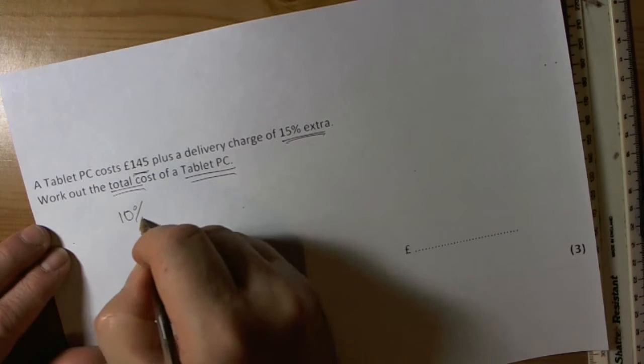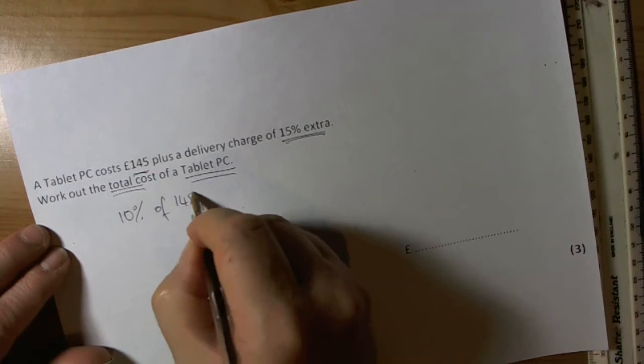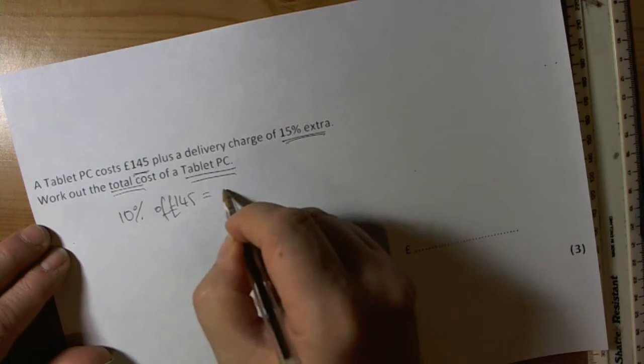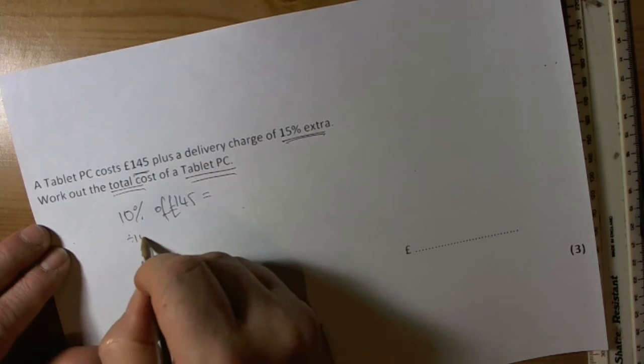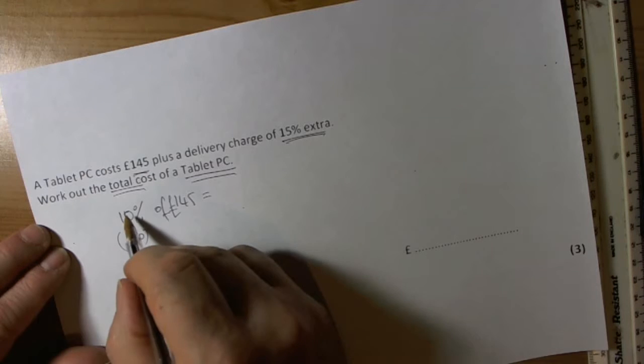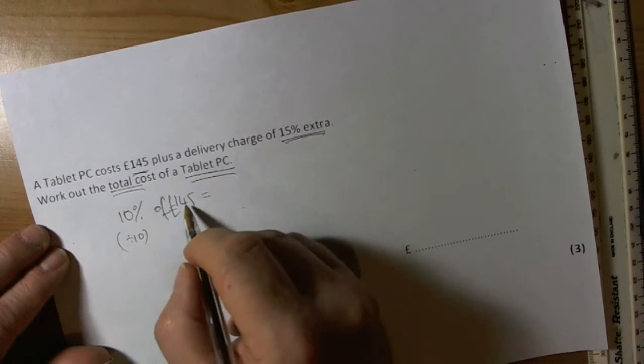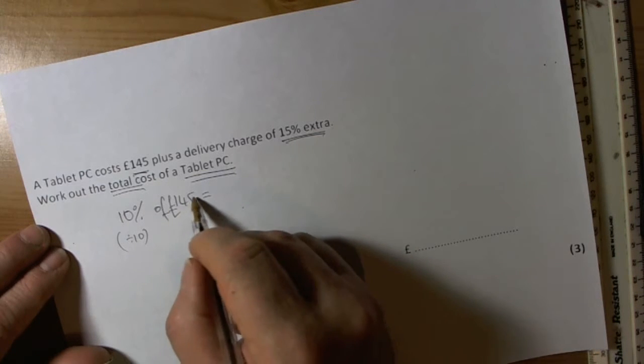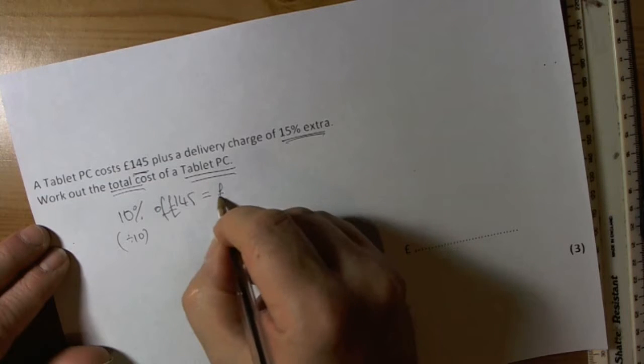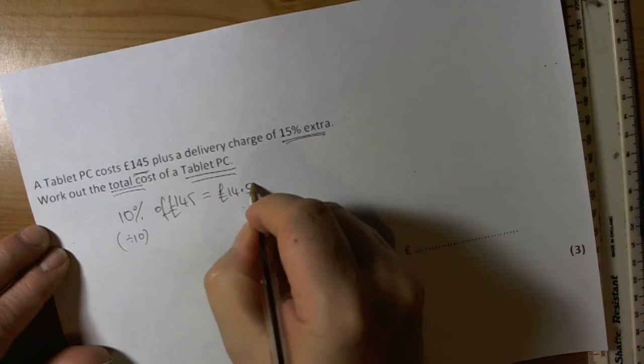Non-calculator question, so the classic way of doing this is to work out 10% of £145 first. 10% means you divide by 10, because 10% is a tenth of 100%. Dividing by 10 means we move these digits down one place value, so that becomes £14.50.